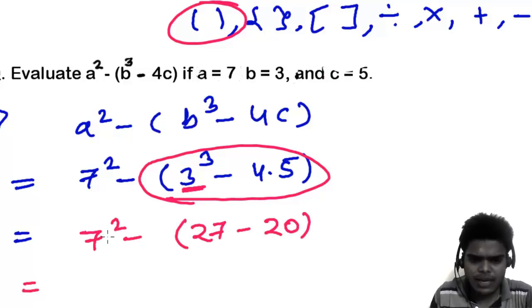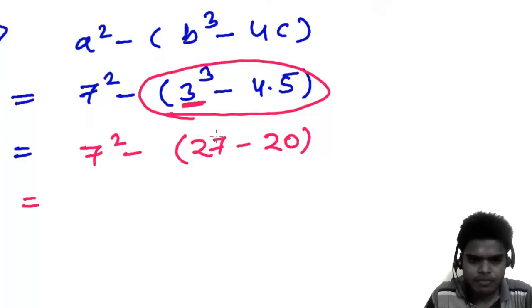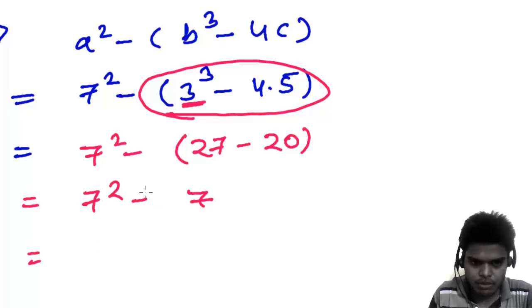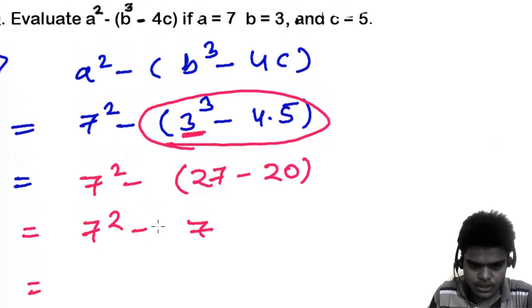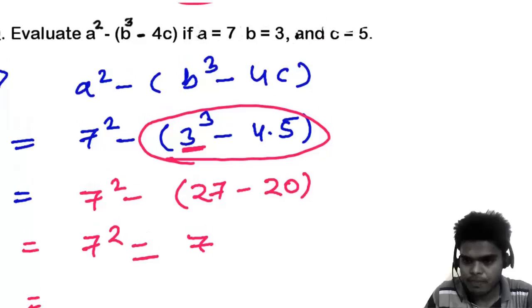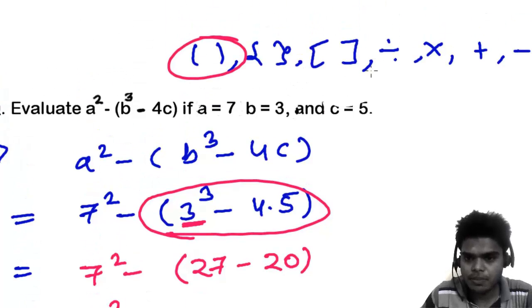So seven square, now you can write actually, it's not going to affect but still I want to write seven square. 27 minus 20 is how much? Good, seven. So seven square, now you have options, one is subtraction another is others. So others comes first.